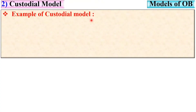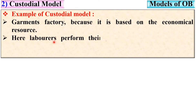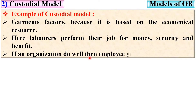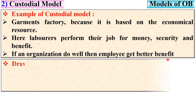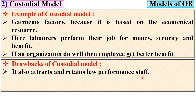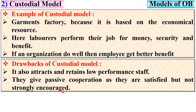Looking at the drawbacks of the custodial model: it also attracts and retains low-performance staff because it is based on economic security. Laborers perform their job for money, security, and benefit. Employees give passive cooperation — they are satisfied with the economic security provided by the company but are not strongly encouraged. The employee requirement that is met is security.